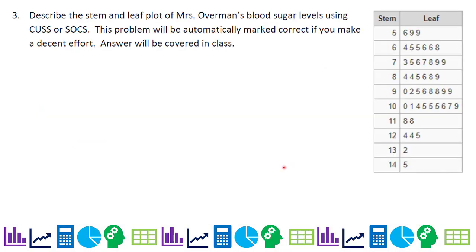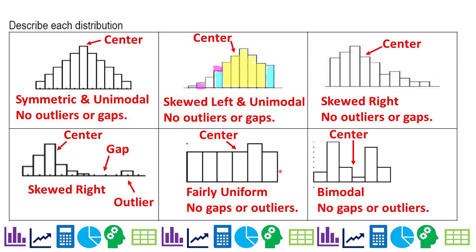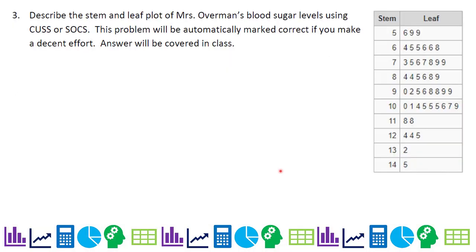We're going to use what I just talked about to describe this distribution. SOCS is in your textbook. I got used to CUSS, which is center, unusual features, spread, shape and spread, either order.